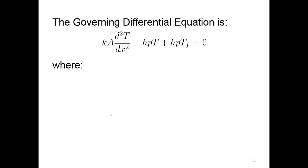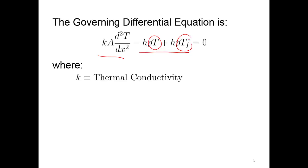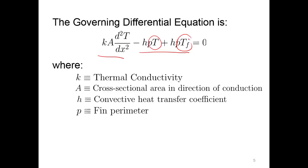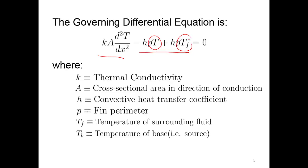The governing differential equation for this includes conduction and the overall convection happening between the temperature on our fin and the temperature of the surrounding fluid. K is our thermal conductivity, A is the cross-sectional area in the direction of conduction going down the fin, H is the convective heat transfer coefficient, P is the fin perimeter — which accounts for heat loss from the fin surfaces — Tf is the temperature of the surrounding fluid, and Tb is the temperature of the base, which is the source.